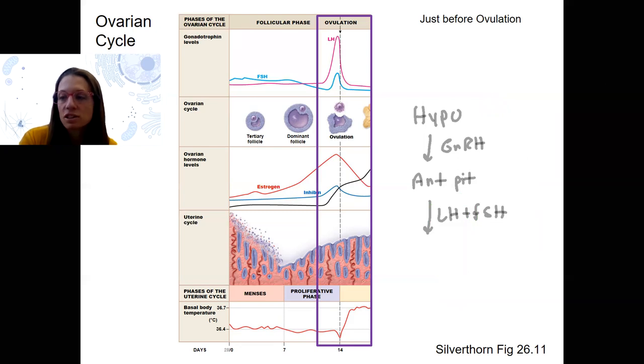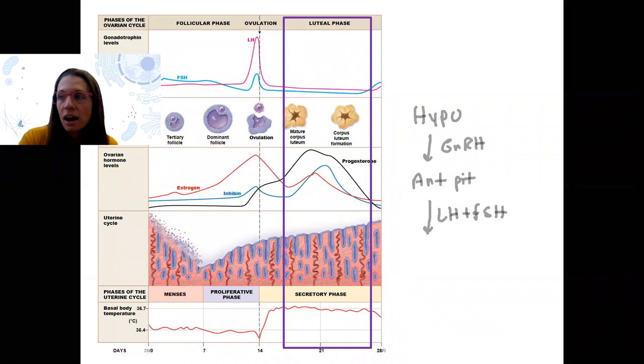So ovulation occurs. We then need to go back to negative feedback. Luteal phase here. How do we turn this system off? Well, now we've got, we still have the ovary, but in the ovary, what is there? What's in the ovary?